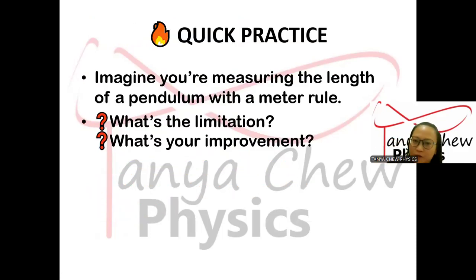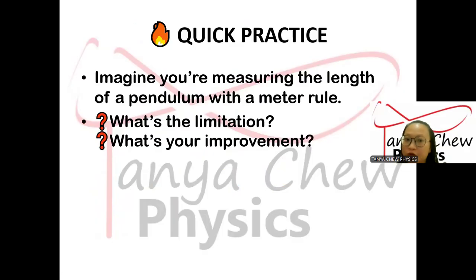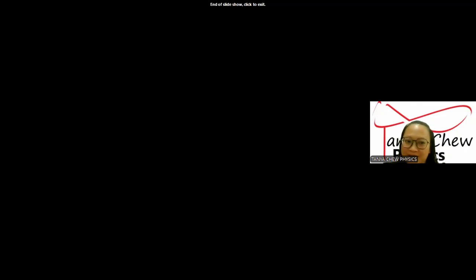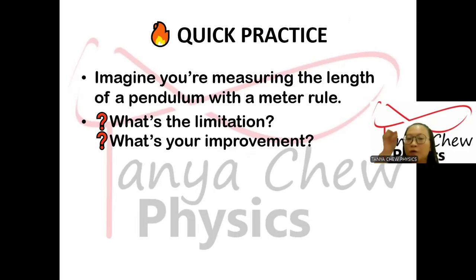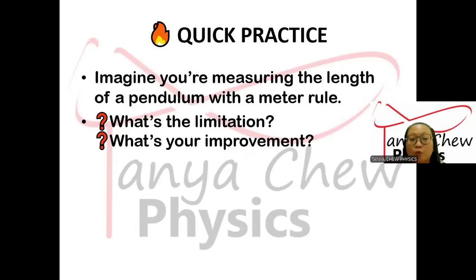Now for a quick practice: imagine you are measuring the length of a pendulum with a meter rule. What could be the limitation, and what is your improvement? Comment below and I will reply one by one. To summarize, master your limitations and improvements because they can easily boost your AS Physics Paper 3 marks. Remember: first, be specific; second, be realistic; third, match your improvements to your limitation. Don't forget to like, subscribe, and join my Facebook group for free resources, tips, and weekly physics Q&A. See you in the next video!